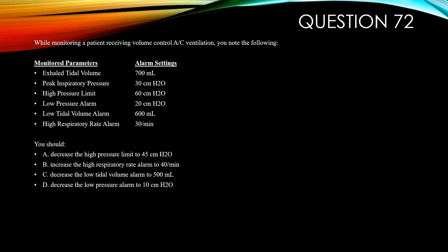Question 72. When monitoring a patient receiving volume-controlled AC ventilation, you note the following parameters and alarm settings: exhaled tidal volume 700 mL, peak inspiratory pressure 30 cmH2O, high pressure limit 60 cmH2O, low pressure limit 20 cmH2O, low tidal volume alarm 600 mL, and high respiratory rate alarm 30. You should: A, decrease the high pressure limit to 45. B, increase the high respiratory rate alarm to 40. C, decrease the low tidal volume alarm to 500. And D, decrease the low pressure alarm to 10.